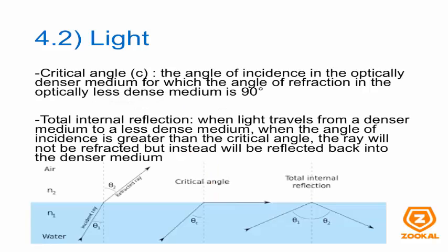Critical angle. For refraction, there is something known as the critical angle, which is the angle of incidence in the optically denser medium for which the angle of refraction in the optically less dense medium is 90 degrees. Basically, the critical angle is this angle here which causes your refracted ray to go along the horizontal line perpendicular to the normal. This here is your critical angle.